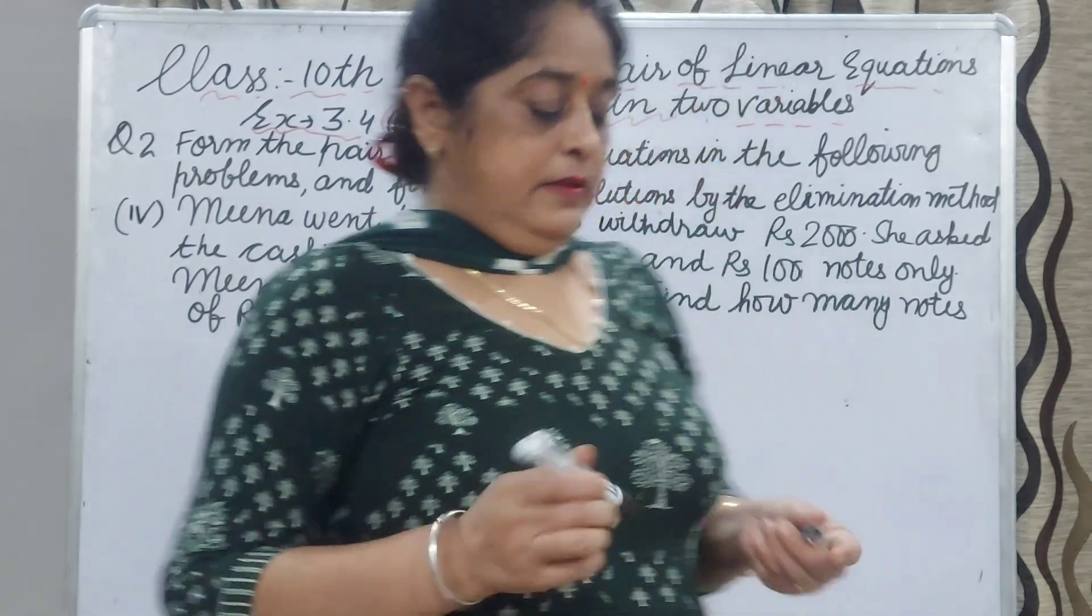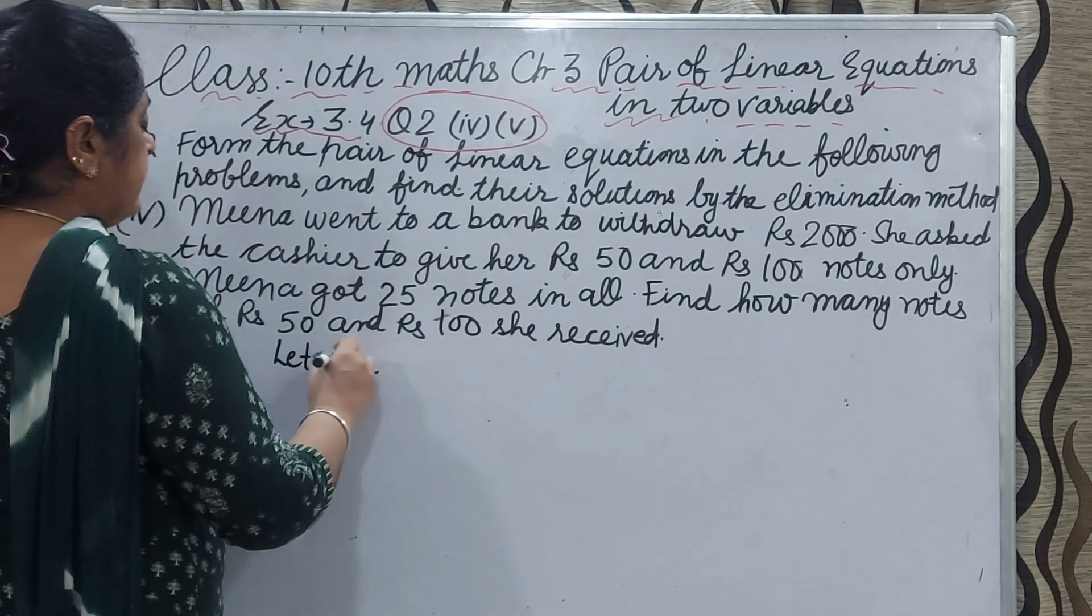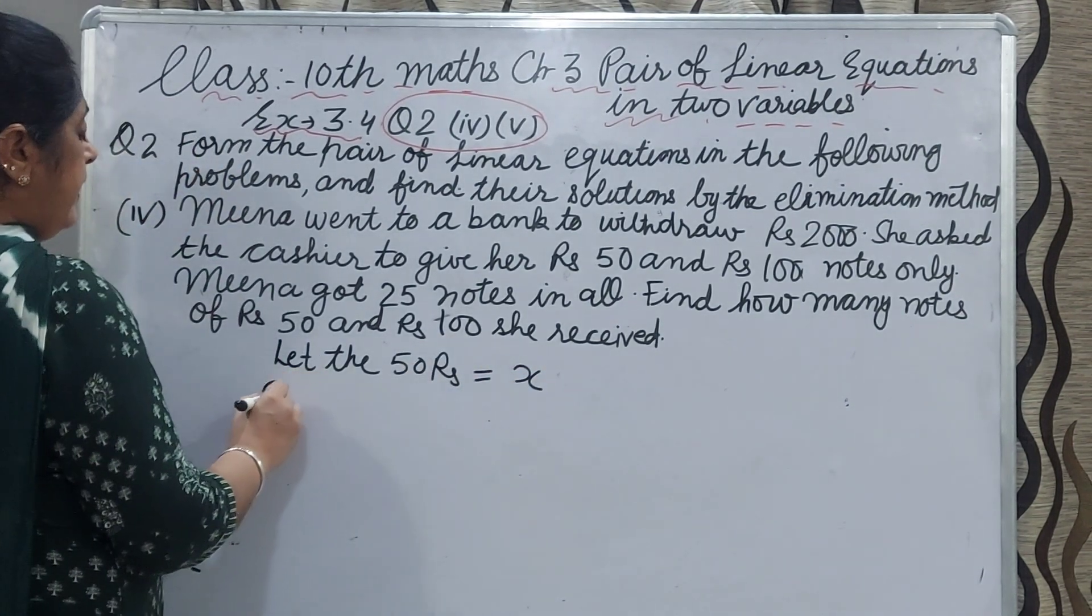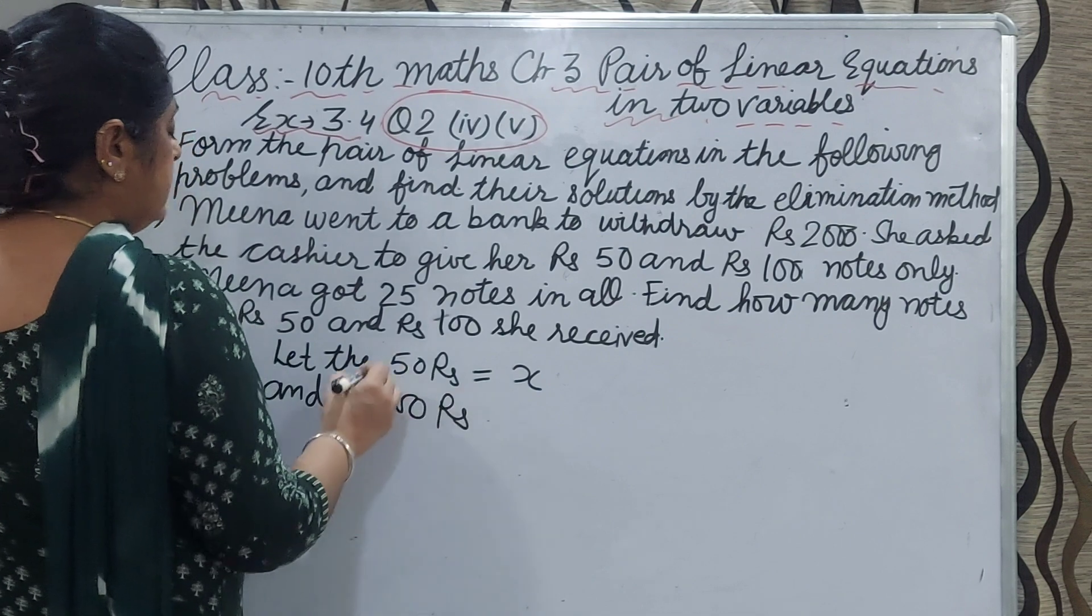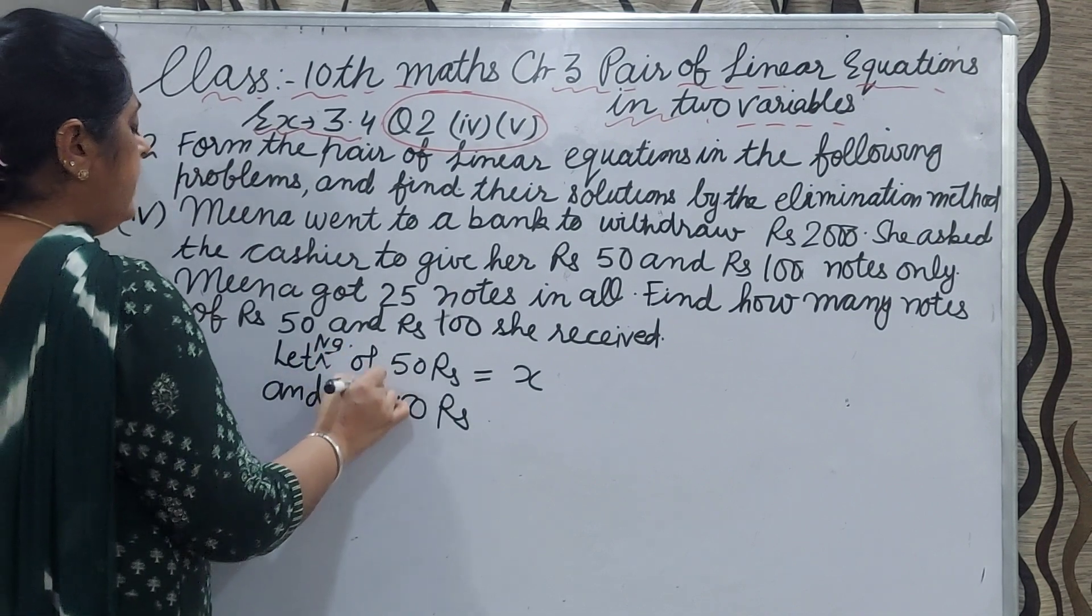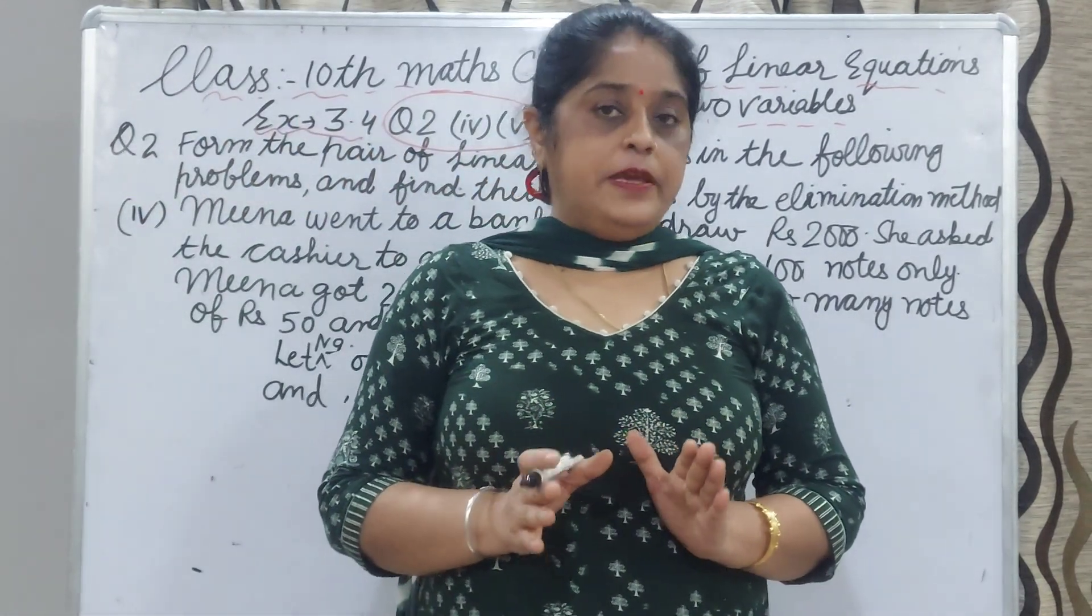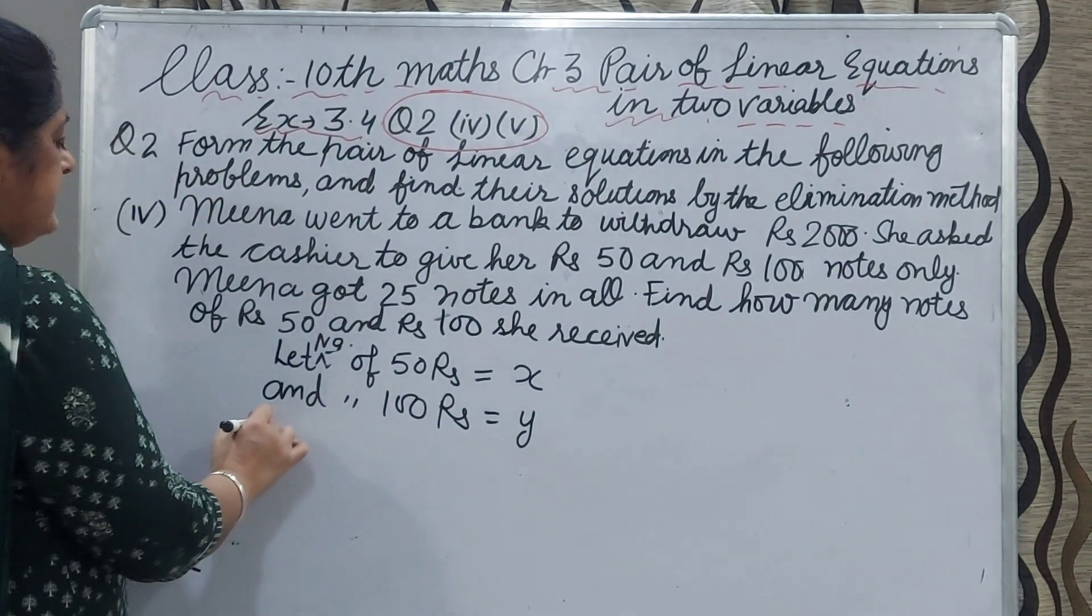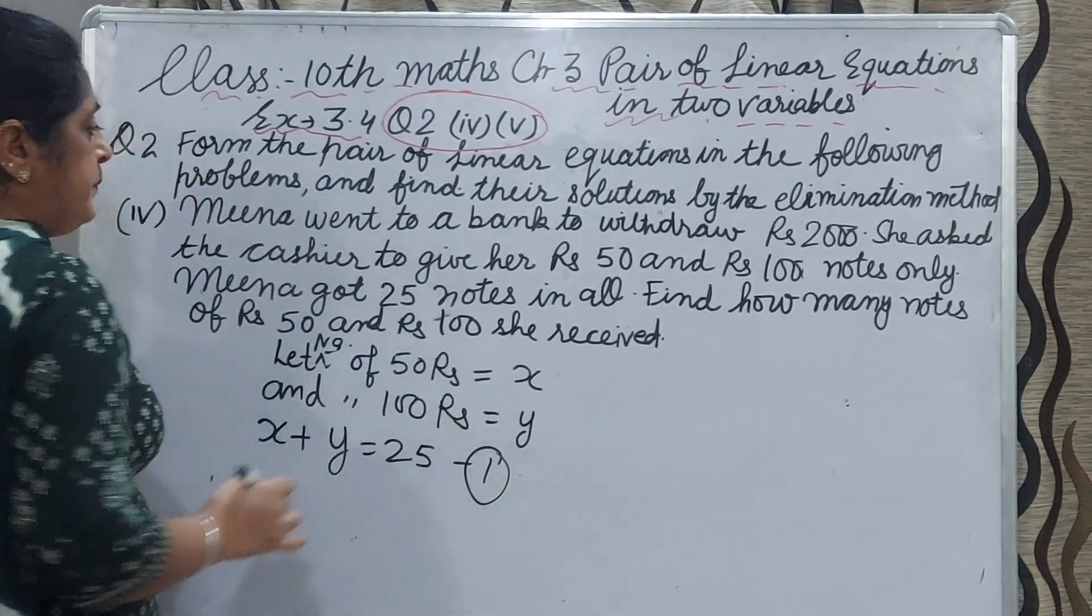First of all, you assume let the 50 rupees notes are equal to x and the 100 rupees notes, you can write here number of 50 rupees note and number of 100 rupees note are y. Total notes she got 25, so first equation you can write x plus y equal to 25. This is your equation number 1.